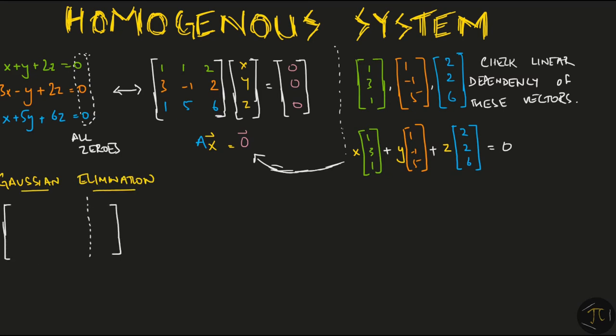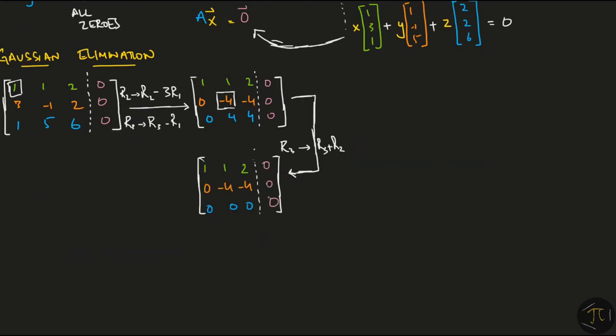First we write the given system using an augmented matrix form. We identify the first pivot in the first column and using this, we do these elementary row operations to obtain zeros below the first pivot. Notice at the right hand side, the output vector won't ever change since they are all zeros. The candidate for the next pivot is the element in the second column and the second row. So using this minus 4, we make zeros below it. The next pivot needs to be below the previous pivot and to the right of it. But since we don't have any such non-zero number, we stop the process.